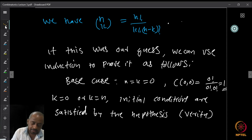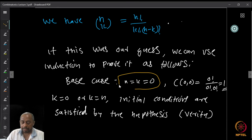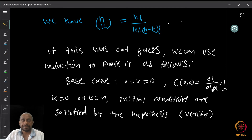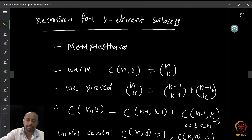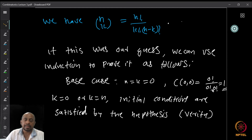We start the proof as follows. The base case is n equals k equals 0, and we observe that C(0,0) equals 0 factorial over 0 factorial times 0 factorial, which is 1. So the base case holds. We also look at the other initial conditions: k equals 0 or k equals n, and the initial conditions are satisfied by substituting in the formula.